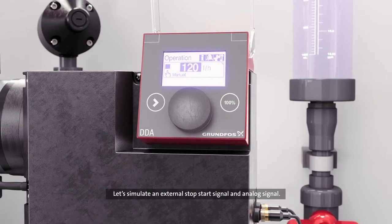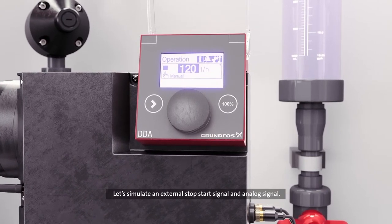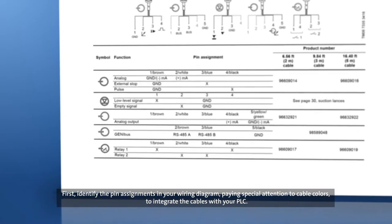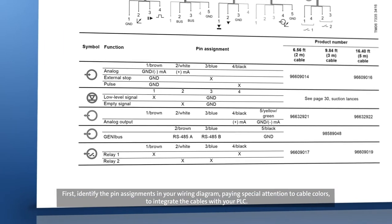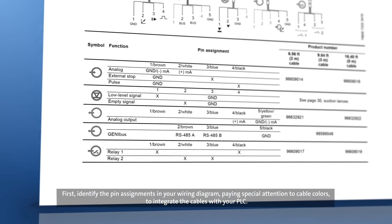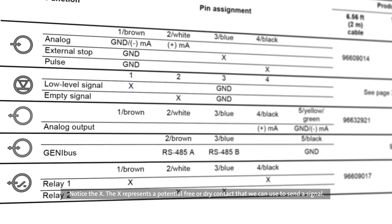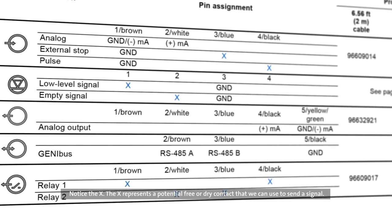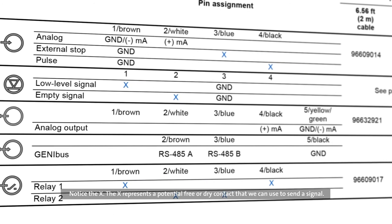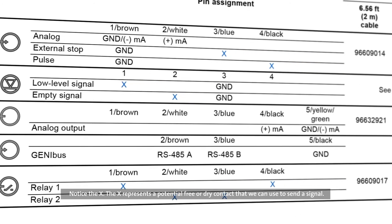Let's simulate an external stop start signal and analog signal. First, identify the pin assignments in your wiring diagram, paying special attention to cable colors, to integrate the cables with your PLC. Notice the X. The X represents a potential free or dry contact that we can use to send a signal.